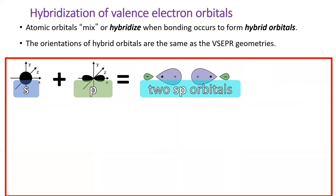If we mix one S and one P, we form two SP orbitals. They each have one big lobe, colored in blue, and one little lobe, colored in green. They face in opposite directions.